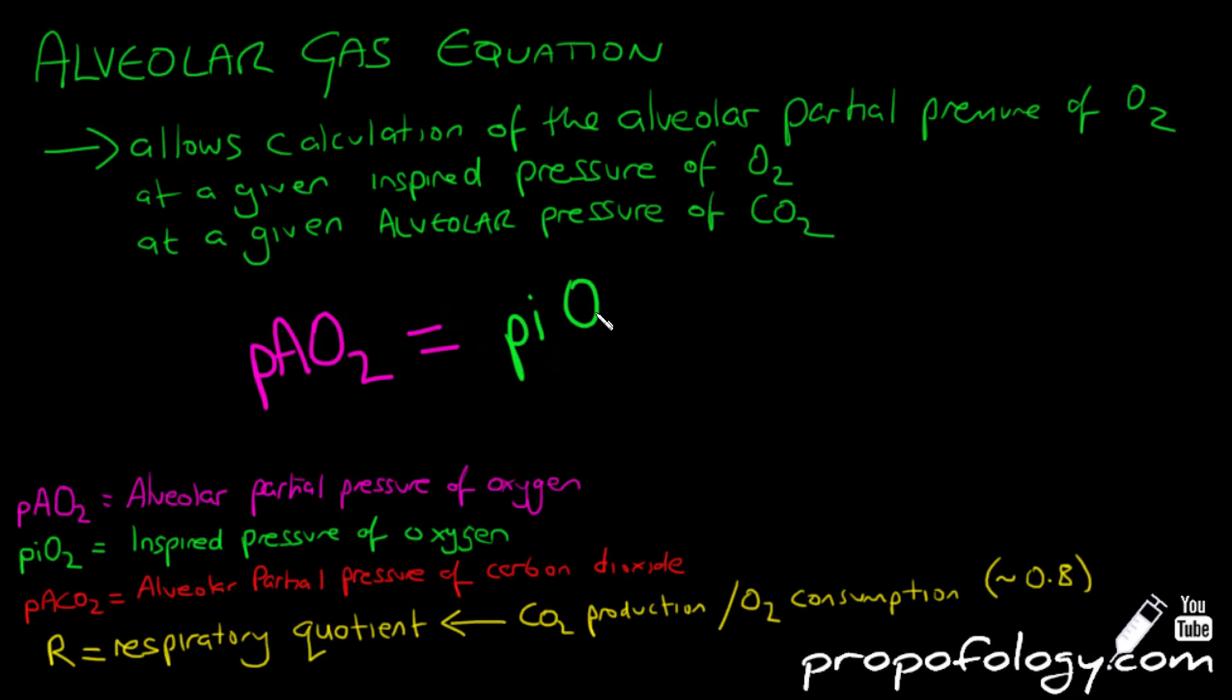PAO2, which means the alveolar partial pressure of oxygen, is equal to the PiO2, which is the inspired pressure of oxygen, minus the PACO2, which is the alveolar partial pressure of carbon dioxide, over R, which is the respiratory quotient. The respiratory quotient is CO2 production divided by oxygen consumption.